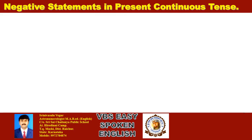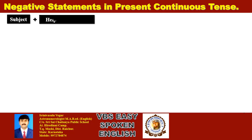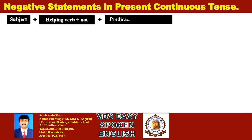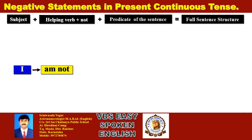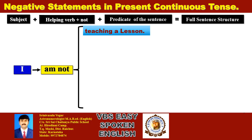Now, negative statements in present continuous tense. The structure is: Subject plus helping verb plus NOT plus predicate of the sentence. Subject 'I', plus 'I am not', plus predicate of the sentence.